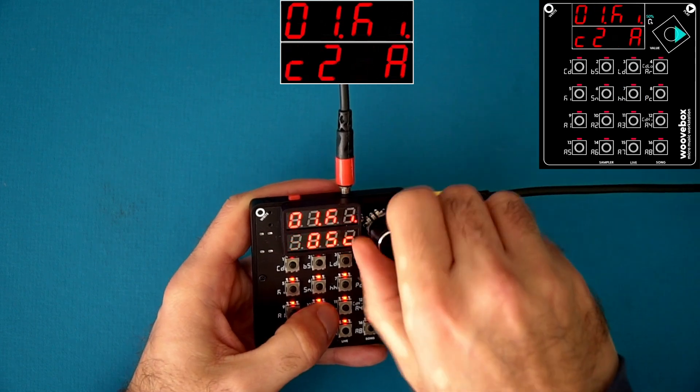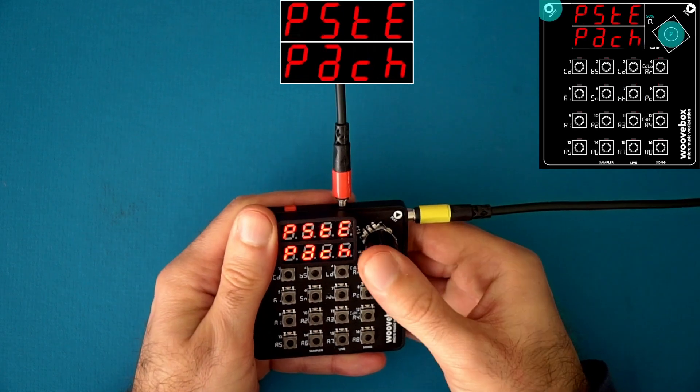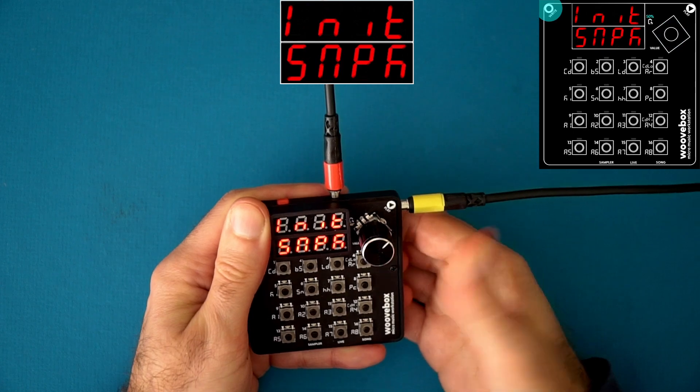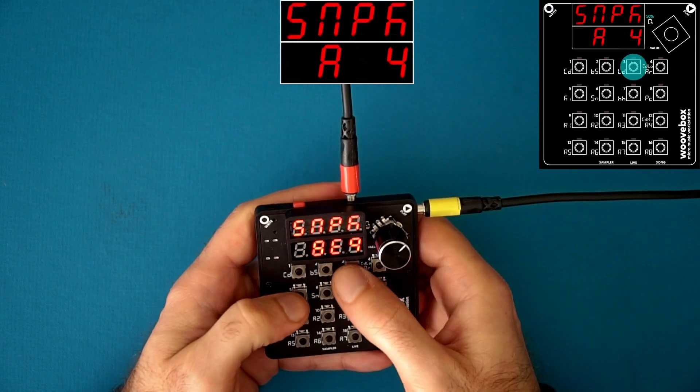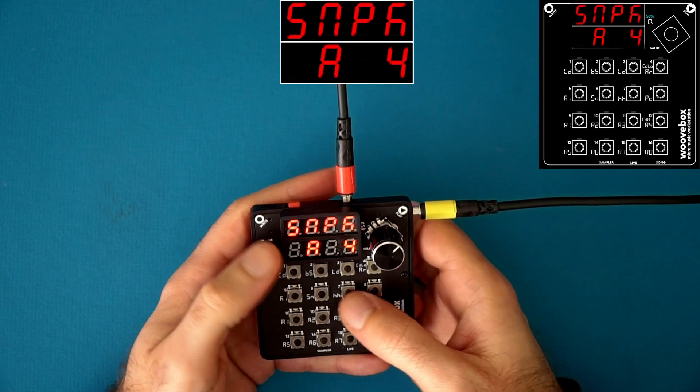There you go. Sample kit. Then I can go to the patch page and initialize this kit. Boom. And now I should have the last kit that I used.